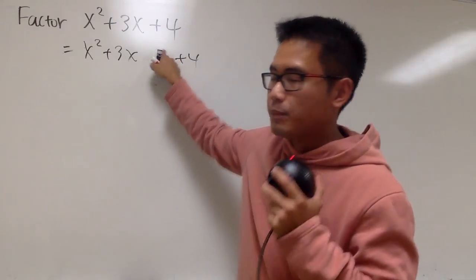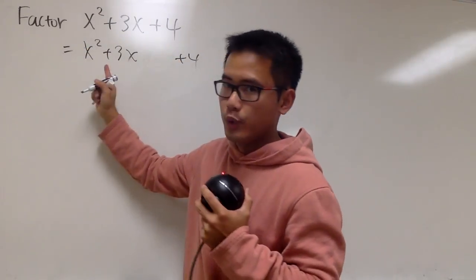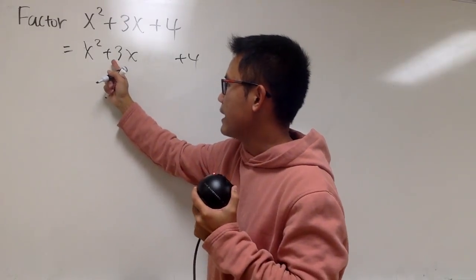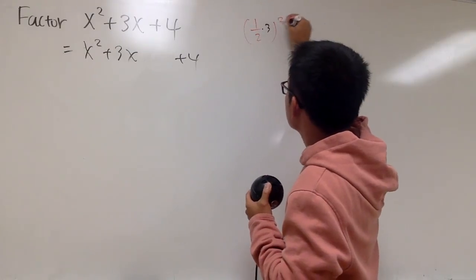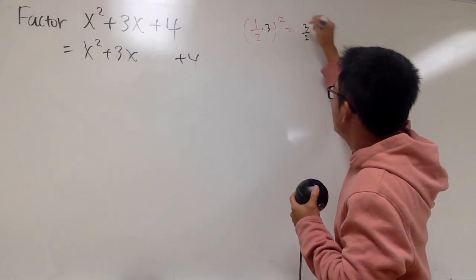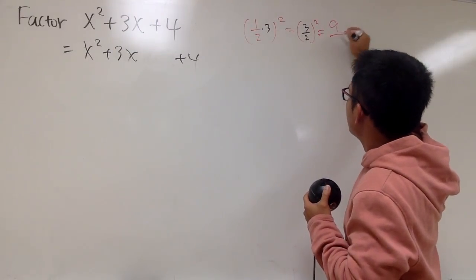To figure this out, we have to make sure we must have a 1 in front of x squared, which we do right here. And now let's look at the coefficient of x, which is 3. So we take one half of the coefficient of x, which is 3, put it in a parenthesis and square that. You see that inside just 3 over 2. And then you square that, you get 9 over 4.